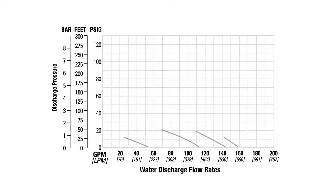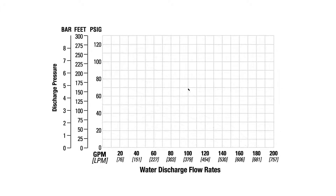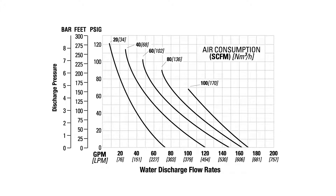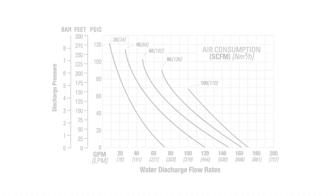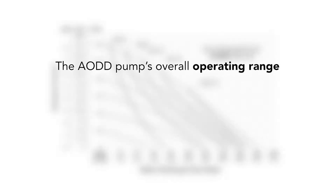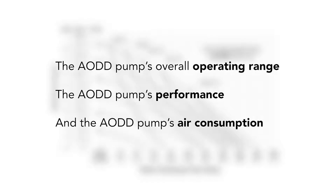The gray curved lines connecting the horizontal axis to the vertical axis represent the pump's air inlet in PSIG. The black vertical curved lines represent the air consumption of the AODD pump, measured in standard cubic feet per minute, or SCFM. There are three main data points an AODD pump performance curve can define: the pump's overall operating range, its performance, and its air consumption.